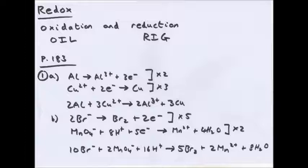So the overall equation is 2Al plus 3Cu2+ becomes 2Al3+ plus 3Cu. The charges balance - on one side you have 6 pluses, on the other side you have 6 pluses. On one side you have 2 aluminiums on both sides, three coppers on both sides, so that balances. And that is a redox.